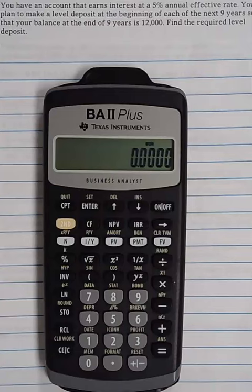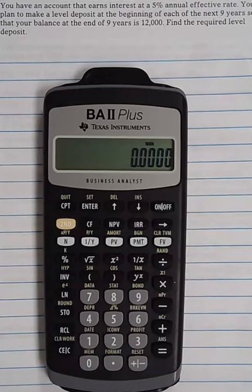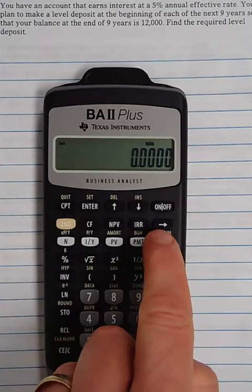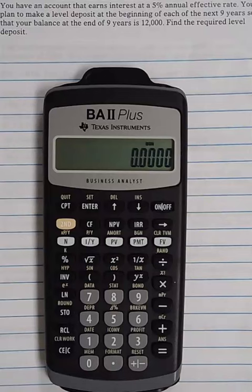So this is a time value of money problem. We know what the future value needs to be. We are looking for what the payments need to be. We know the number of payments and we know the annual effective rate. So before we do anything else, let's do second clear TVM. Make sure there's nothing stored in there.